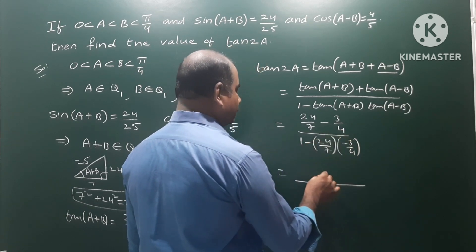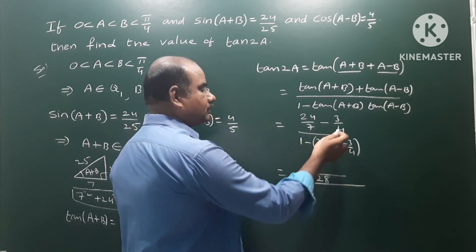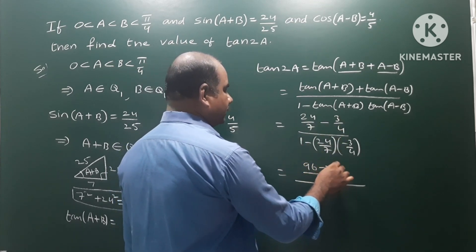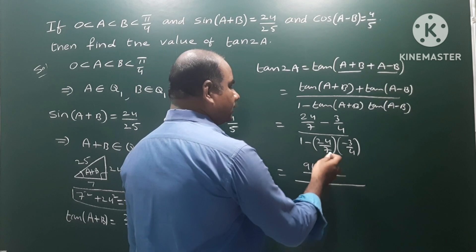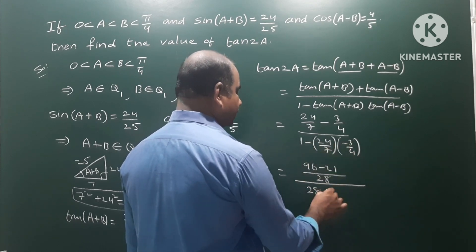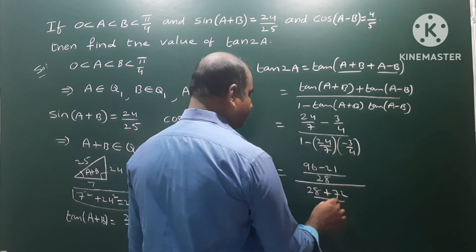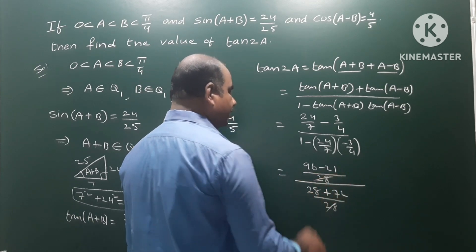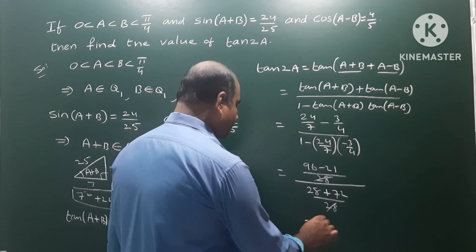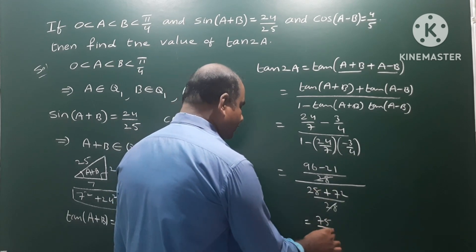Taking LCM 28, the numerator becomes (96 - 21)/28 = 75/28. The denominator is 1 + 72/28 = (28 + 72)/28 = 100/28. So we have 75/28 divided by 100/28.